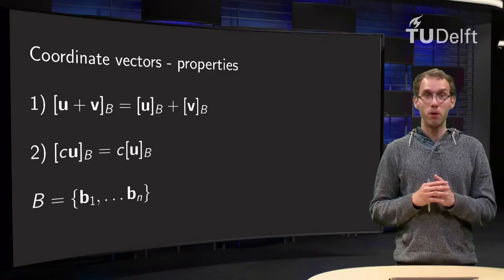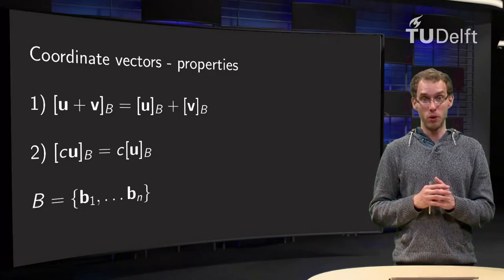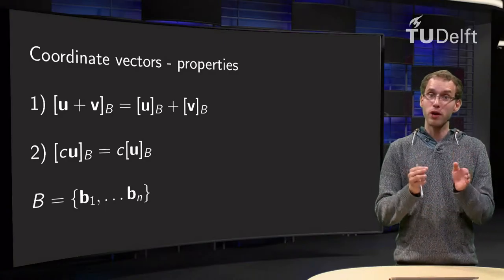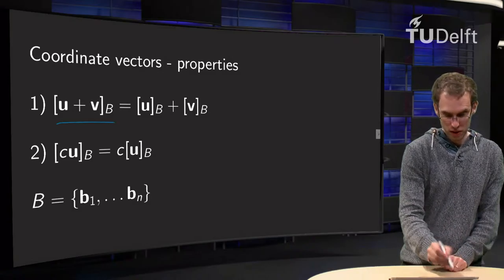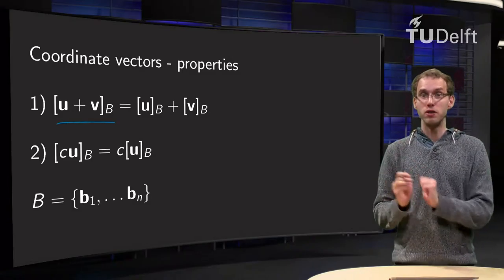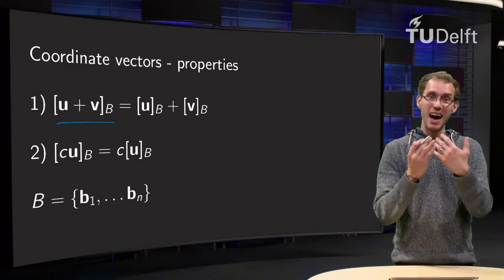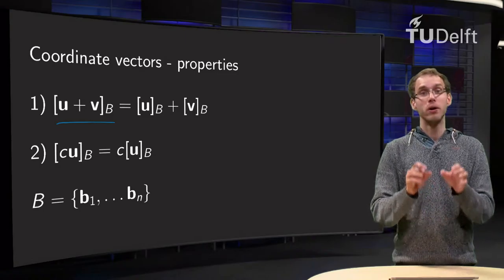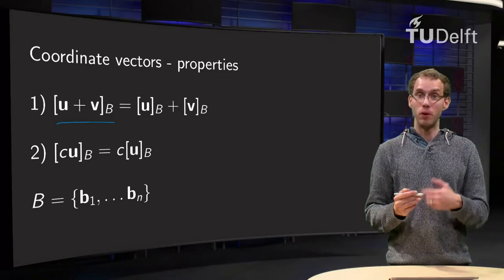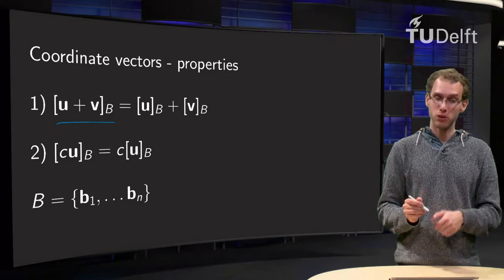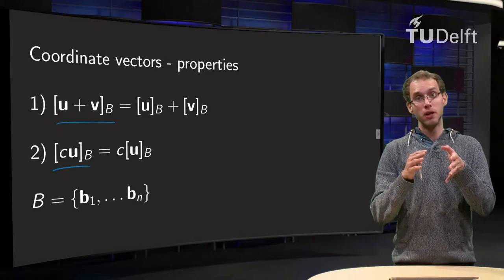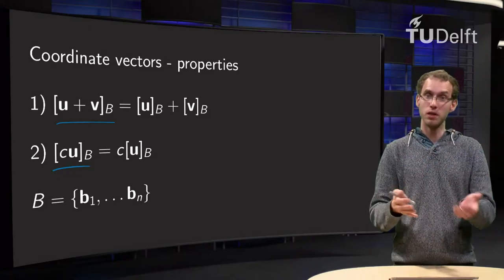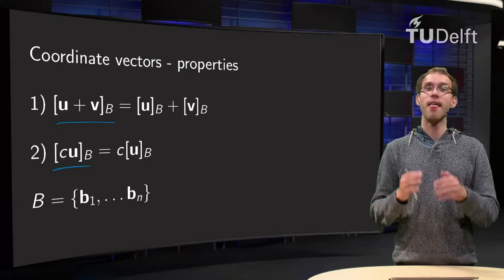We have two important properties of coordinate vectors. If we have two vectors u and v, the coordinate vector of the sum u plus v — that is, [u + v] in basis b — equals [u]_b plus [v]_b. So you can either add u and v first and then compute the coordinate vector, or compute both coordinate vectors and add those. And you can take scalars out: the coordinate vector of c times u equals c times the coordinate vector of u.